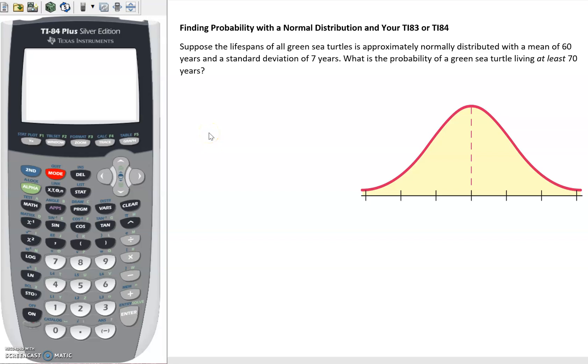Sometimes we know we have a normal or approximately normally distributed population of some sort. In this case we're going to look at green sea turtles. Let's suppose that they have a mean or average lifespan of 60 years and a standard deviation of 7 years, and that the distribution of all green sea turtle lifespans is approximately normal.